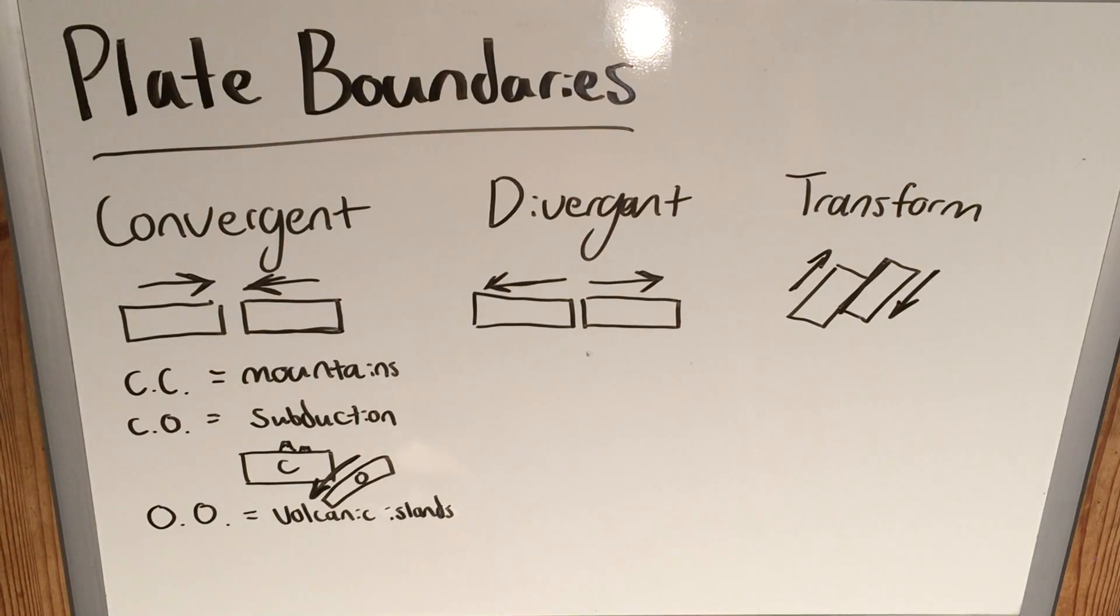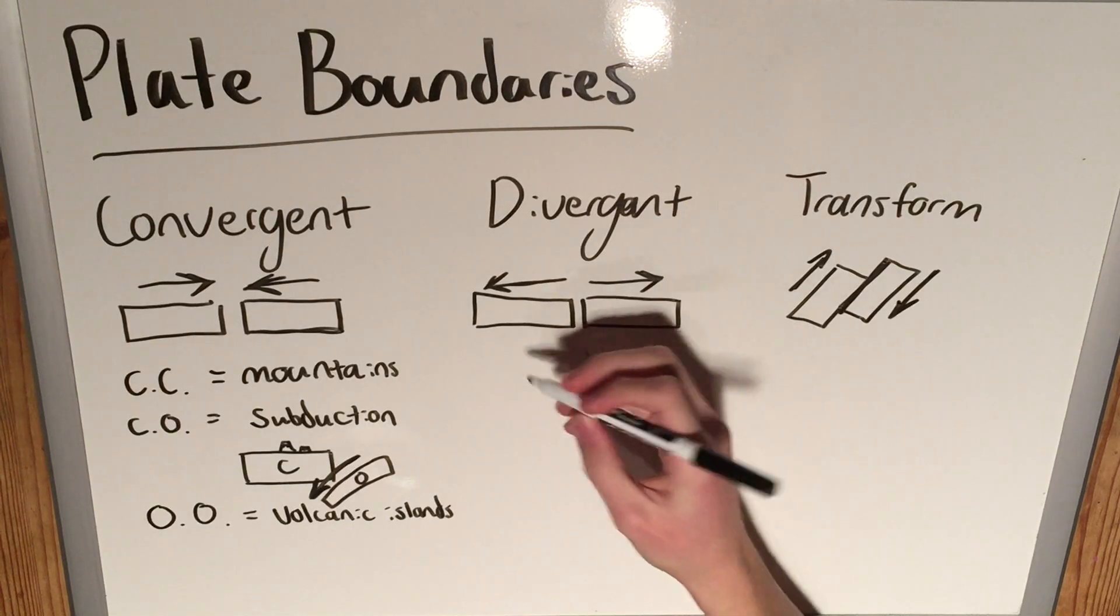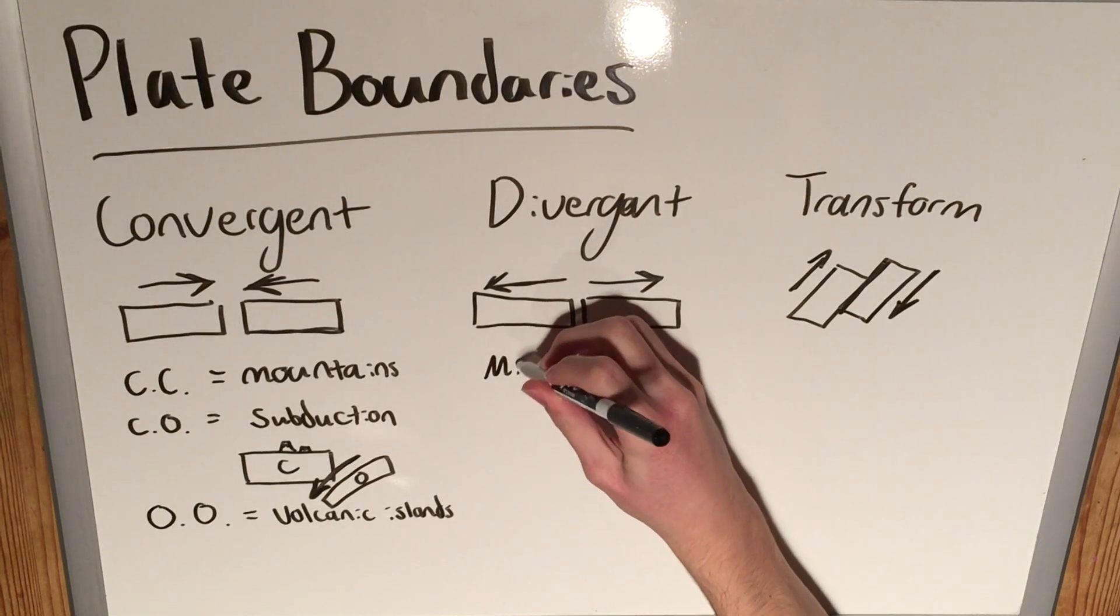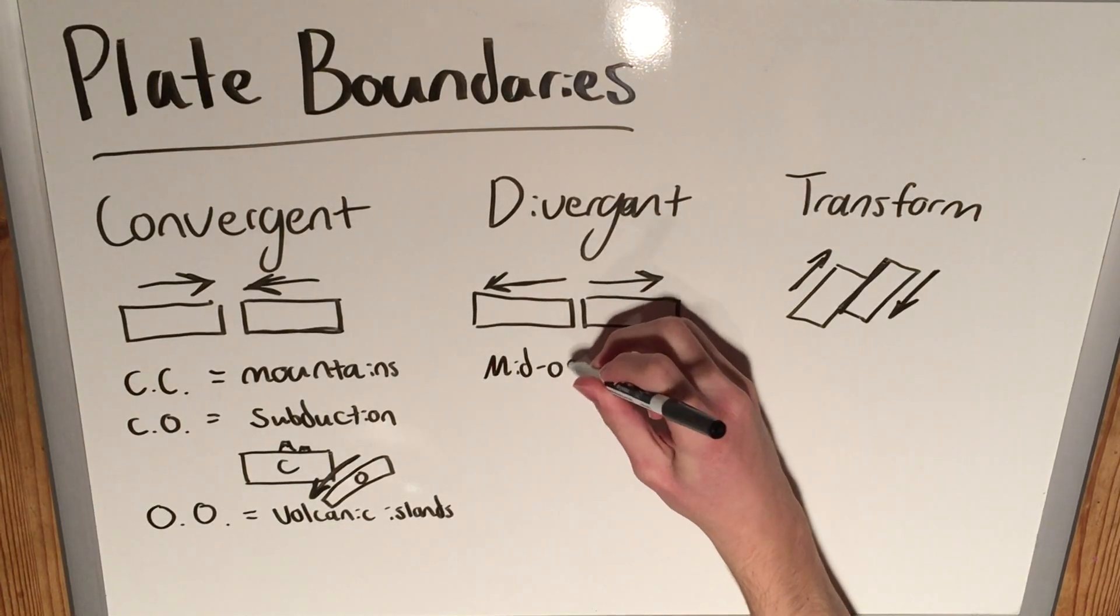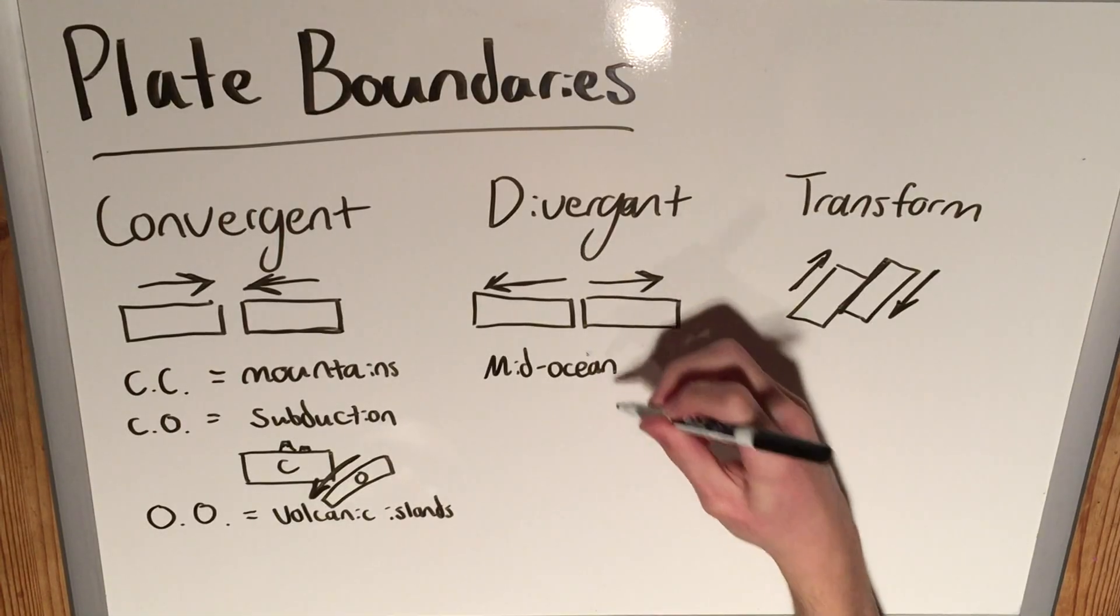So that's convergent plate boundaries. Then we have divergent, and the only really one we're concerned about here is what happens in the oceans, because we actually don't have any divergent plate boundaries within continents. So the big thing about divergent plate boundaries is we are going to have mid-ocean ridges. These are very interesting, might make another video on them.